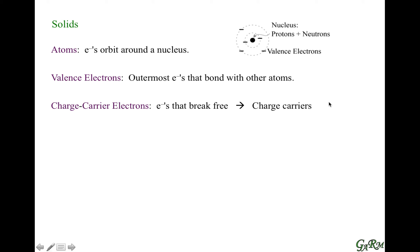Valence electrons, if they break free from the atom, basically become charge carriers — they're available for conduction. Since they can move, they can carry charge.